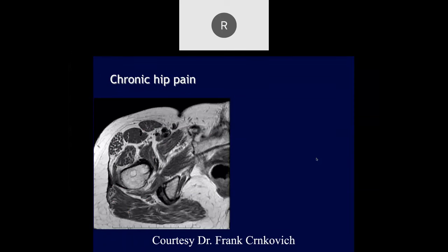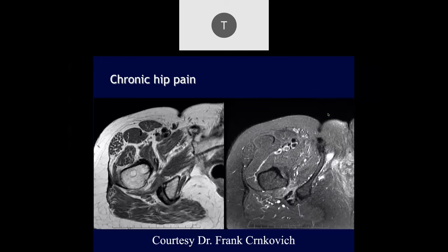Taysen: chronic hip pain case. There's some atrophy of the quadratus femoris. It looks like ischial femoral impingement with edema and atrophy of the quadratus femoris muscle.